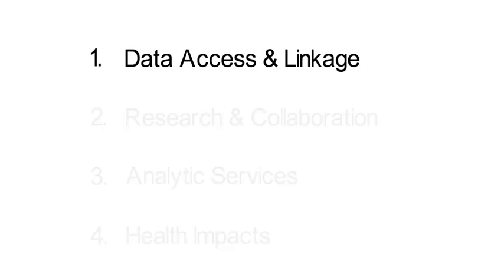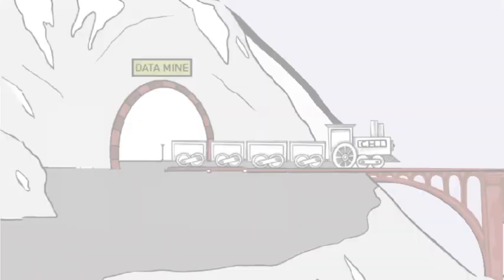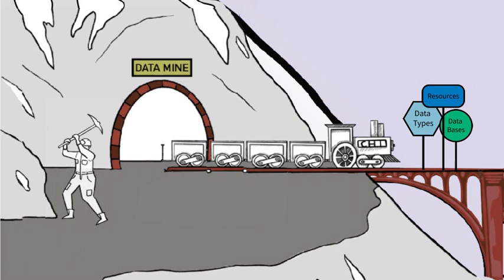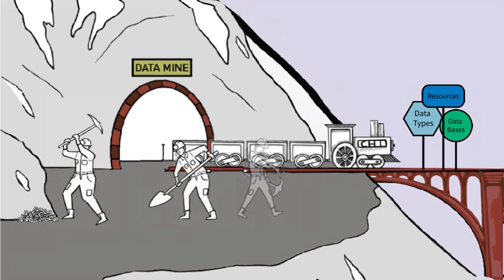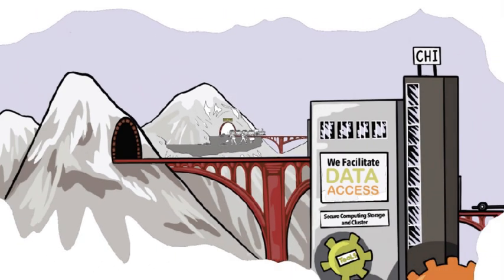First, let's talk about data access and linkage. Identifying available data assets and optimizing their combined use helps to create a more comprehensive insight into specific health issues and improves the quality of research projects. But getting access to different data types, databases, and resources from various domains can be a confusing and lengthy process. This is why we are working to streamline the research experience.